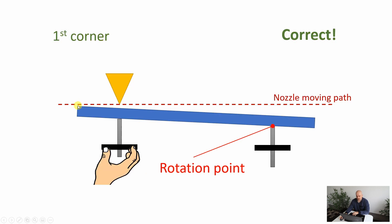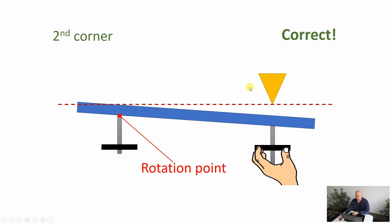Now let's see the correct method. The correct method is to move the nozzle exactly above the knob, and with this, this will be the rotation point. We rotate this knob and get the perfect friction, perfect distance between bed and nozzle, and then we move it under the next bolt.